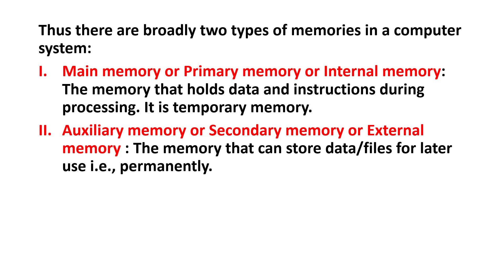Thus, there are broadly two types of memories in a computer system. First is main memory — also called primary memory or internal memory — which holds data and instructions during processing, just as it did when the two numbers were being multiplied. Second is auxiliary memory — also called secondary memory or external memory — which stores data or files permanently for later use.